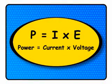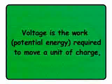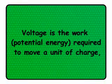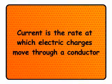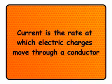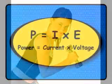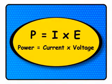It must be understood that neither voltage nor current by themselves constitute power. Rather, power is the combination of both voltage and current in a circuit. Remember that voltage is specific work or potential energy per unit charge, while current is the rate at which electric charges move through a conductor. Voltage is analogous to the work done in lifting a weight against the pull of gravity, and current, or rate, is analogous to the speed at which that weight is lifted. Together, as a product, multiplication of voltage and current constitutes power.